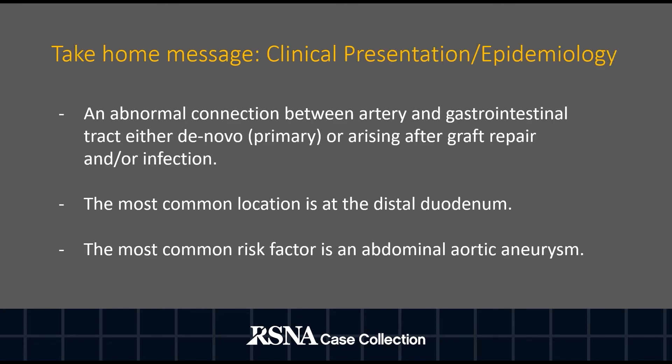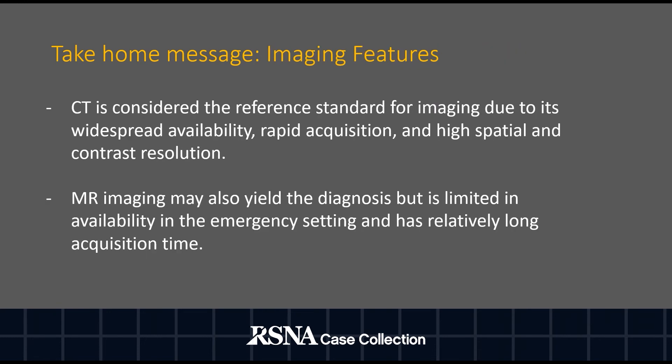As part of the take-home message, remember that an arterioenteric fistula is an abnormal connection between an artery and the GI tract, and can be de novo or after graft repair and/or infection. The most common location is at the distal duodenum and the most common risk factor is an abdominal aortic aneurysm. CT scan is the reference standard for imaging due to its widespread availability, rapid acquisition, and high spatial and contrast resolution. MR imaging may reveal the diagnosis but is limited by availability in the emergency setting and its long acquisition time.